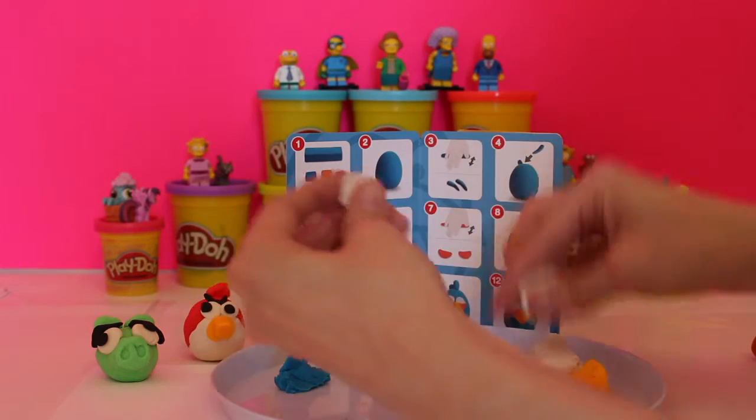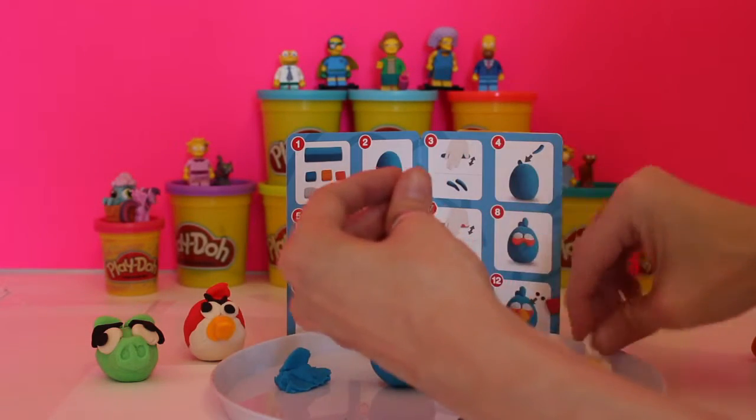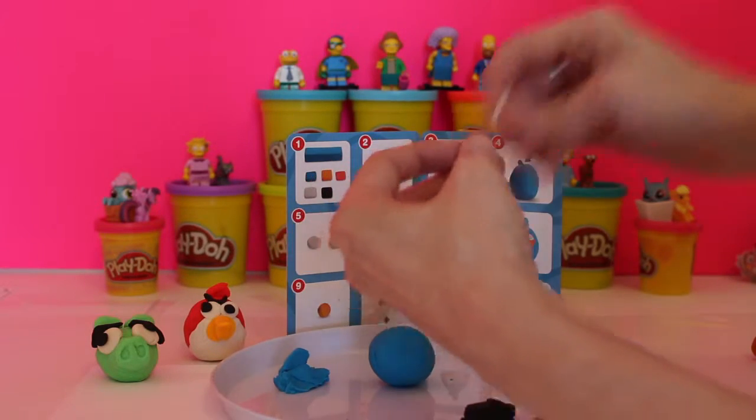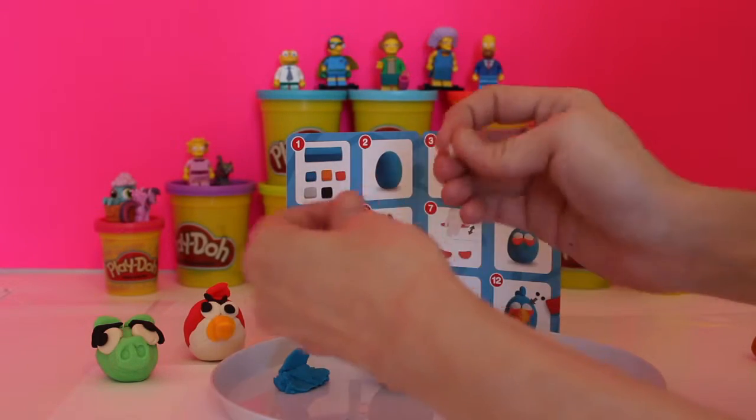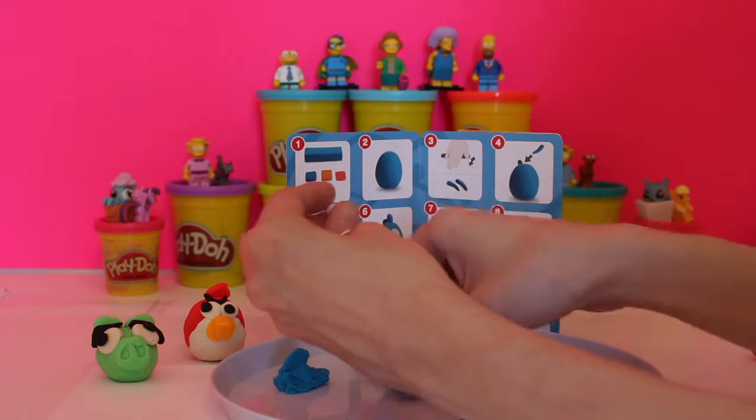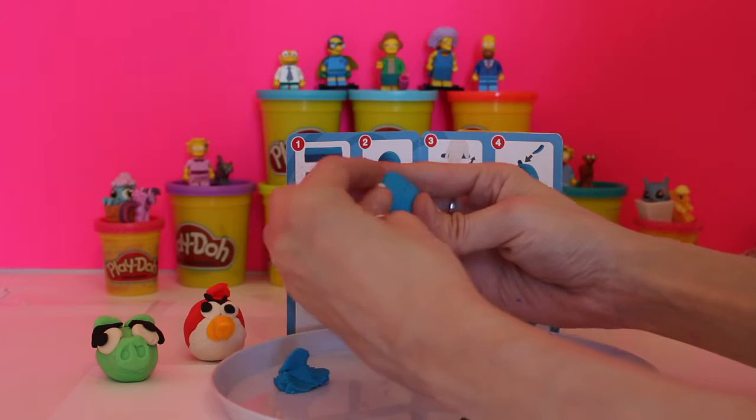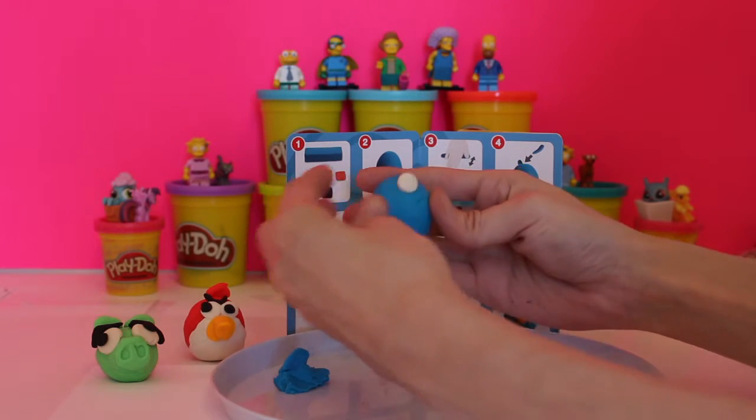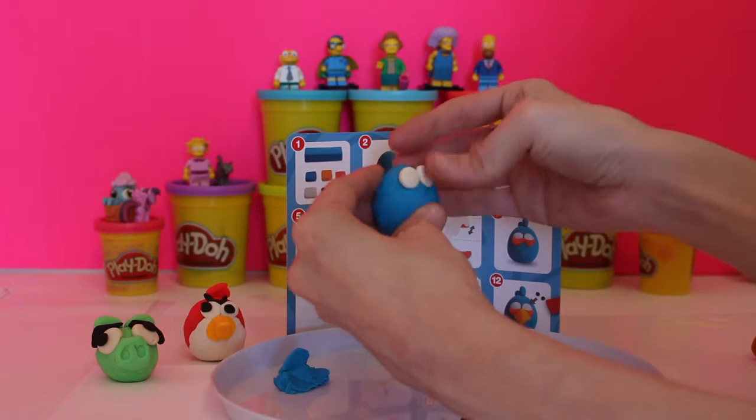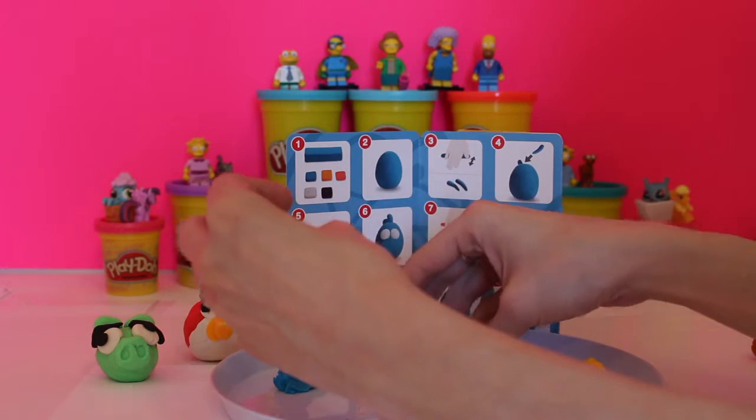So now we're going to take little pieces and make some little eyes for him. Just like this. Tiny little balls. And we are going to put them right here. Just like that. So that's the start of him.